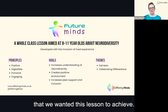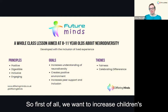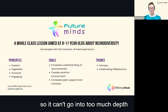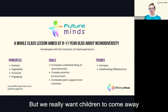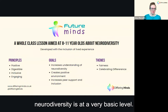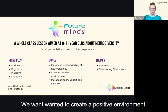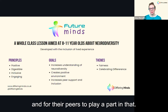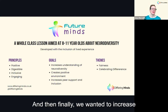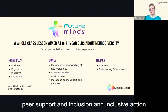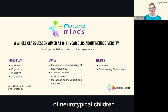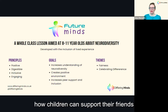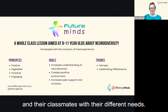We also set clear goals for the lesson. First: increase children's understanding of neurodiversity at a basic level. Second: create a positive environment — making school a more positive place for neurodivergent children, with their peers able to play a part in that. Third: increase peer support and inclusive action — looking at how neurotypical children can support their neurodivergent peers and classmates with their different needs.